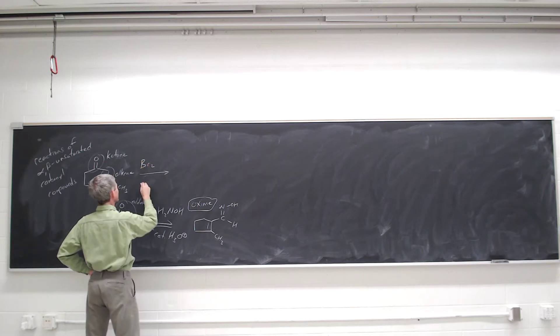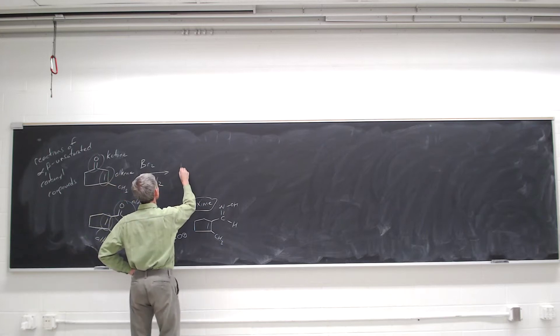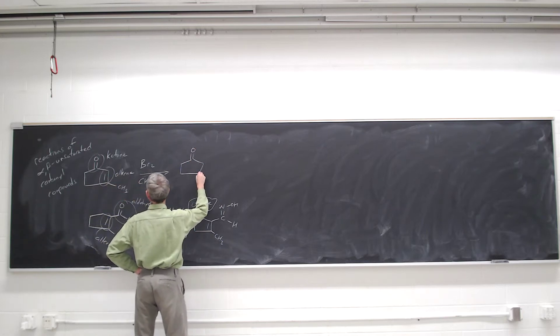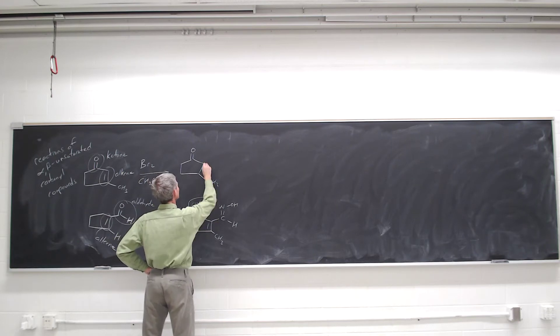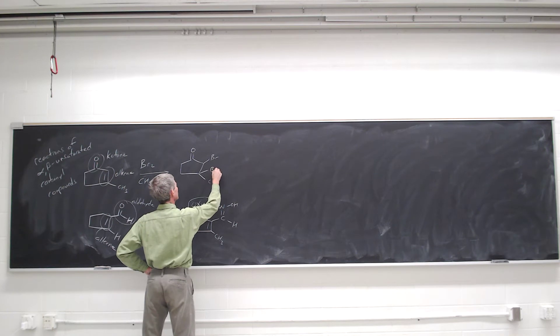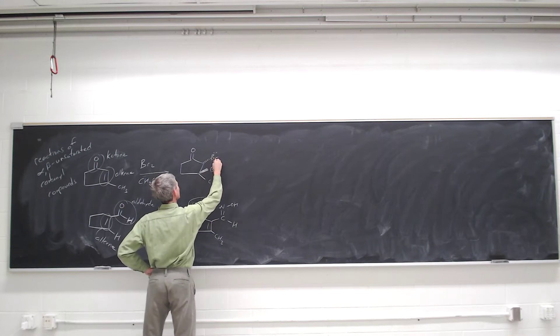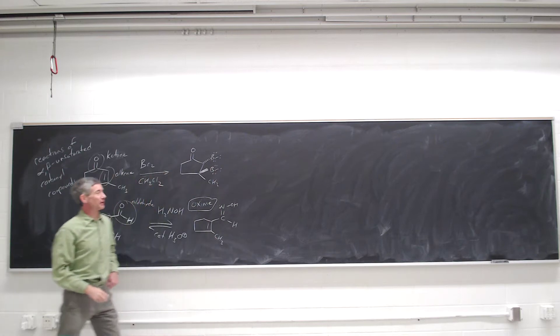We could react this with bromine in dichloromethane. We could expect a dibromide, and furthermore, we would expect that dibromide to have gone through an anti-addition through an intermediate bromonium ion.